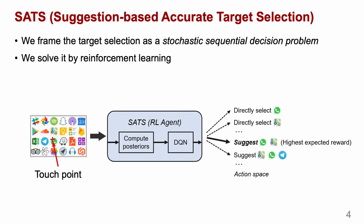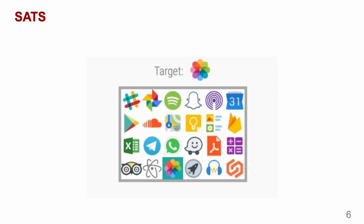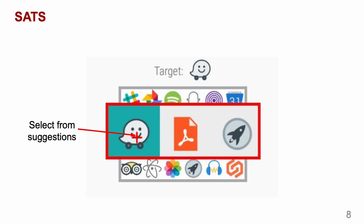Based on the uncertainty of the touch input, SETS automatically decides to directly select a target candidate or show suggestions. Here we show a short video on how SETS works in a real scenario. If the touch input has low ambiguity, as the red cross shown in the video, SETS will directly select the target candidate. However, if the touch input is ambiguous, SETS will show suggestions.